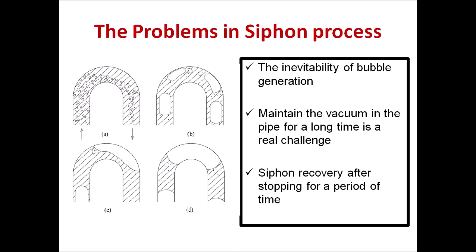To address the bubble problem, a vacuum pump is added to help clean the pipe and maintain continuous siphon flow.